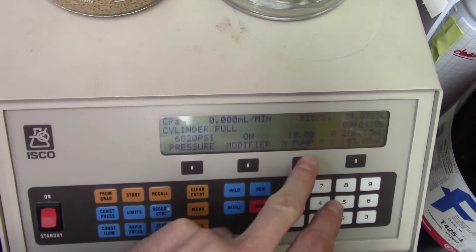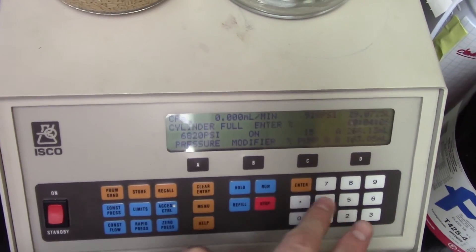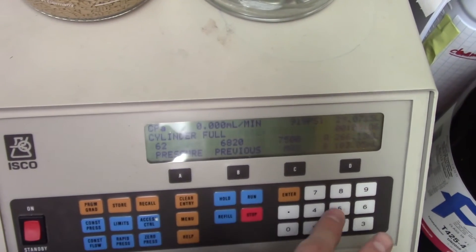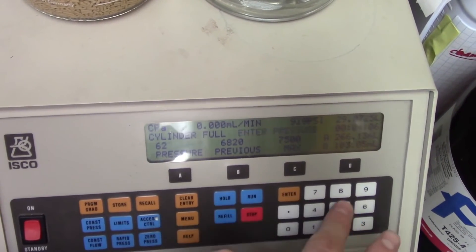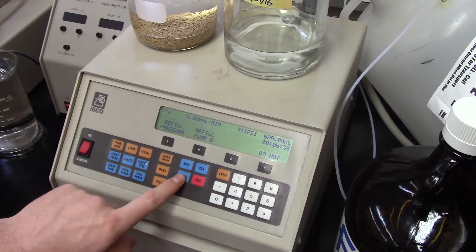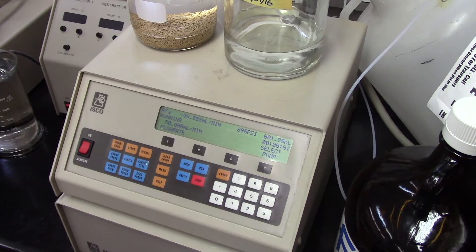Set your pressures and modifier concentrations. The modifier percentage and set pressure can easily be changed on the home screen by clicking the letter directly beneath each value. Fill pump A the same way we did before. Make sure you close all valves when done.